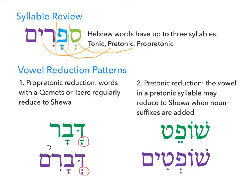All we need to know here is that it's because we've added that ending. Think: kametz or tzere in the pro-pre-tonic position will result in a shortened sheva. That's one pattern we want to know about. The second pattern of changes is similar, but now we're not talking about the pro-pre-tonic syllable — we're talking about the pre-tonic syllable, this one in the middle.